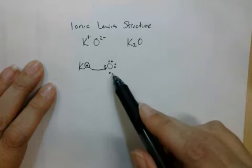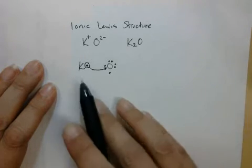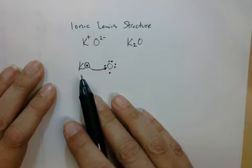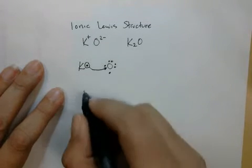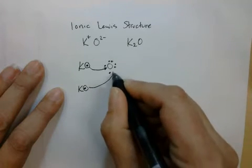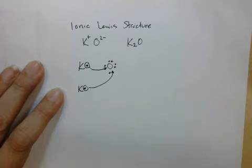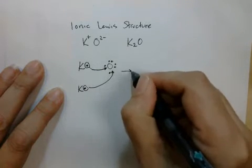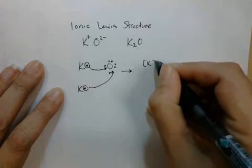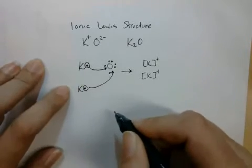That leaves me in a sticky spot because I don't have a pair for that electron, and one unpaired electron is not a very stable state. I can't get another electron from this potassium because it's already lost all of its valence electrons. So what I need is another potassium — just like we saw in the formula — and that will fill into this spot right here. When we draw Lewis diagrams for forming an ionic compound, we actually show those electrons moving from the metal to the non-metal, giving us two potassium ions.